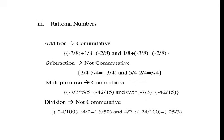Next, multiplication. Multiplication is commutative for rational numbers. See the example: minus 7 by 3 into 6 by 5 equals minus 42 by 15. Then interchanging, 6 by 5 into minus 7 by 3 also equals minus 42 by 15. So multiplication is also commutative for rational numbers.